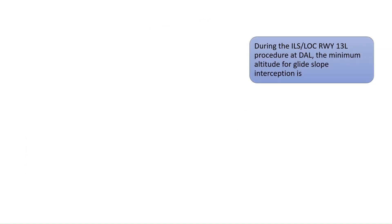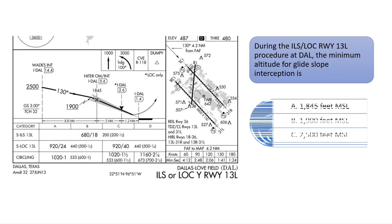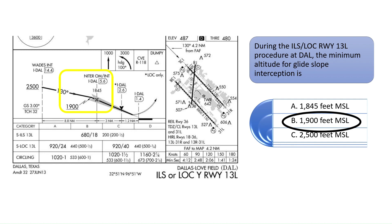During the ILS/localizer approach to runway 13 left at Love Field in Dallas, the minimum altitude for glide slope interception is what? The glide slope interception is at the outer marker of NITER, which is 4.2 nautical miles from the missed approach point. See the number 1,900 which is underlined in the chart. This is the minimum altitude for the glide slope interception, so the correct answer is B: 1,900 feet.